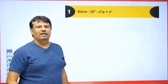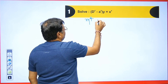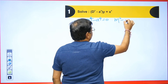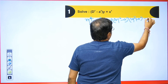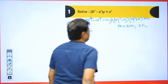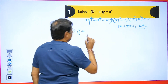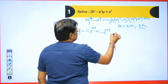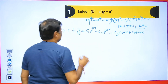Now let's take another example. The CF: we write m squared minus a squared, into m squared plus a squared equals 0. We get m equals plus minus a and m equals plus minus a iota. So CF is c1 e to the power ax plus c2 e to the power minus ax plus c3 cos ax plus c4 sin ax.